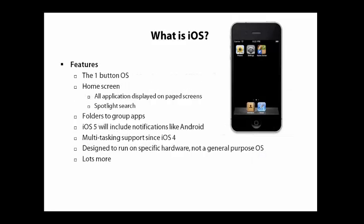iOS has some distinctive features. It's the one-button OS. You can see here on the screen I've got a picture of an iPhone, and there's only one hardware button. It's a little deceiving because there are other buttons within the UI, but the main operation of the OS happens with one hardware button. You've got a home screen with icons that are apps, and there are several pages of screens. If you swipe all the way to the left, you get to a spotlight search where you can search the iPhone.